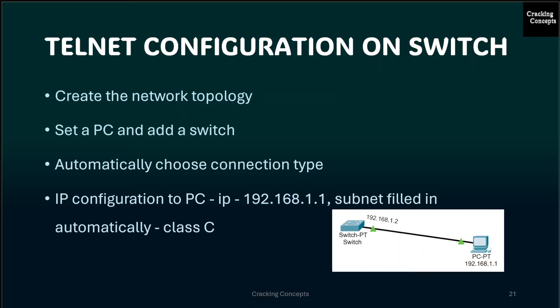Now we will see the different steps involved in Telnet configuration on a switch in Cisco Packet Tracer. First, we create the network topology with a PC and a switch, then choose an automatic connection type. Then we set the IP address for the PC, which is 192.168.1.1, and the subnet mask will be filled in automatically. This is a Class C address, which consists of a 24-bit network address and an 8-bit local host address.